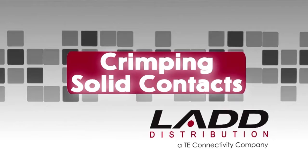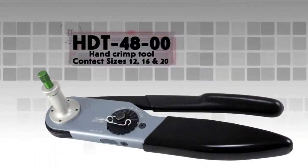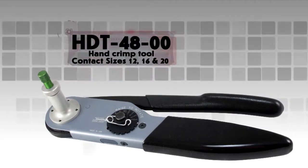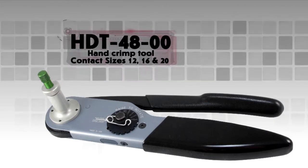Crimping solid contacts using hand tools. For this demonstration, the HDT-48-00 hand crimp tool is being used. This tool will crimp sizes 12, 16, and 20 solid contacts.